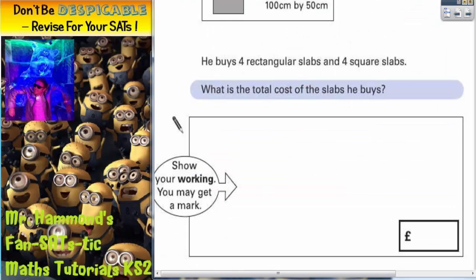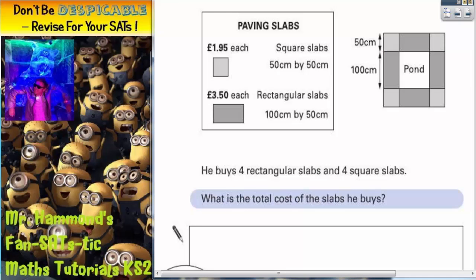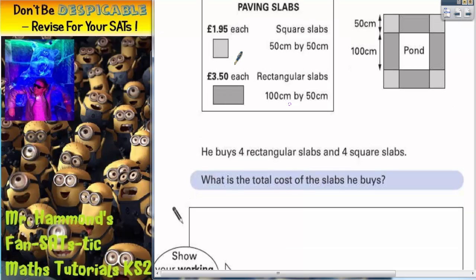He buys four rectangular slabs and four square slabs. Well, the rectangular slabs are £3.50 each, so we're going to want four times by £3.50. And the square slabs are £1.95 each, so we're going to want four times by £1.95. And then, because we want to find the total, we will have to add those two answers together.